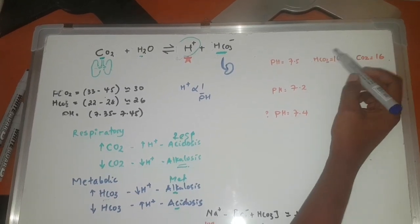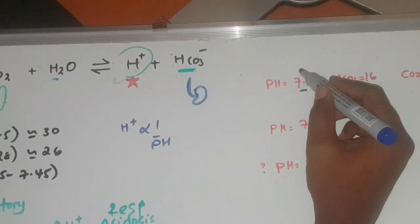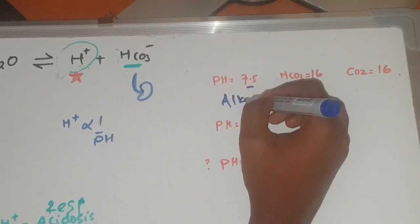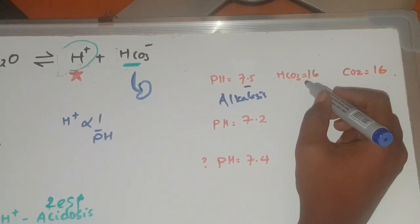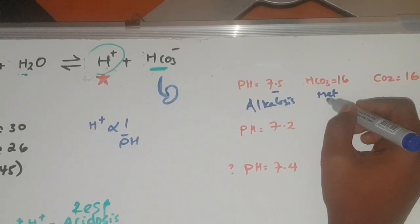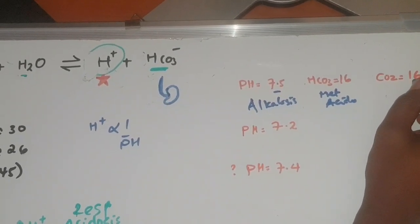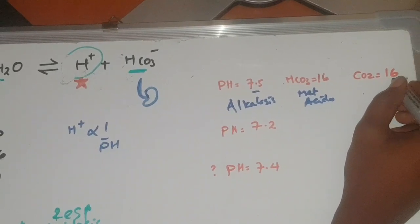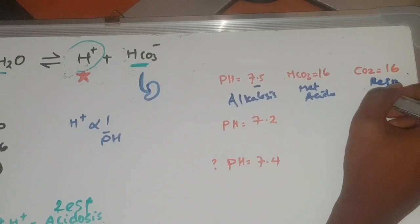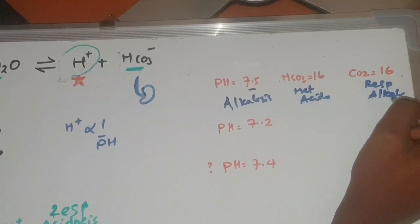Let's say pH is 7.5. A pH of 7.5 is higher than 7.45, so this is alkalosis. If bicarbonate is low, we have metabolic acidosis. Carbon dioxide is also low, so we have respiratory alkalosis. This is an alkalotic state.